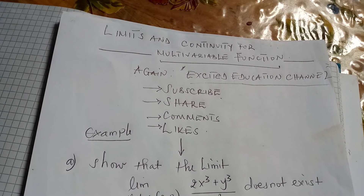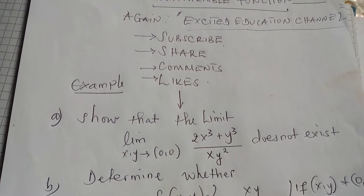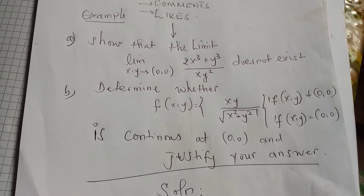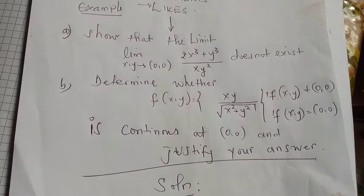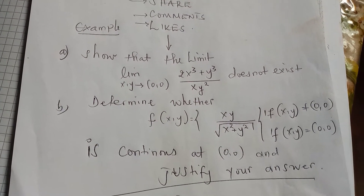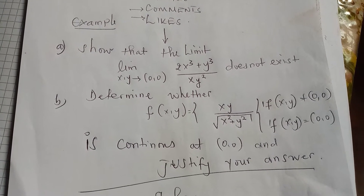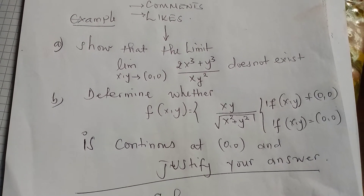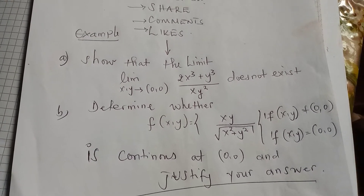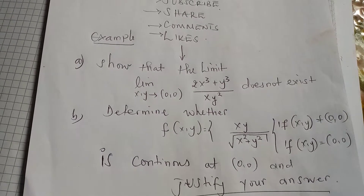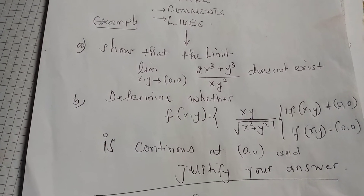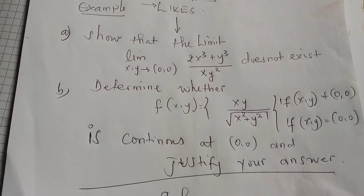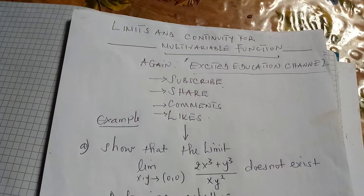This is part of analysis and calculus. The question stated on the paper has two parts: Part A requires showing that the limit as (x,y)→(0,0) of (x³ + y³)/(xy²) does not exist. Part B asks you to determine whether f(x,y) = xy/√(x²+y²) for (x,y)≠(0,0), and 0 for (x,y)=(0,0), is continuous at (0,0) and to justify your answer.